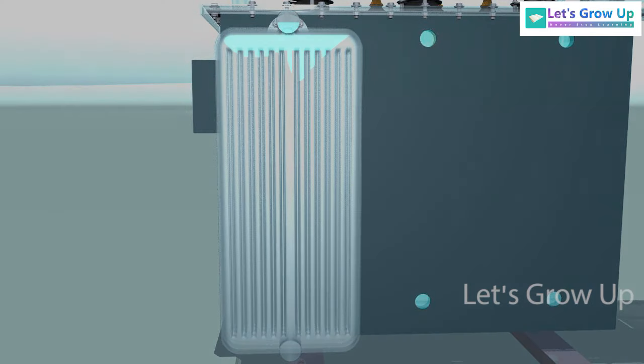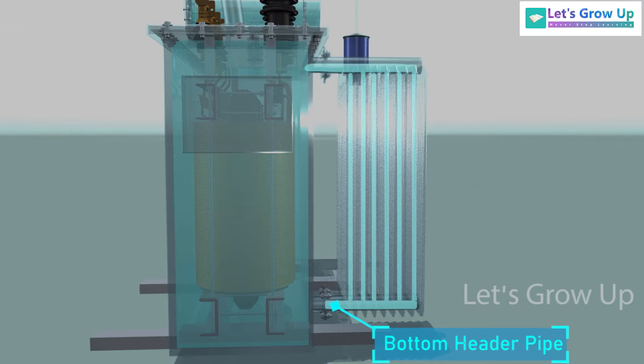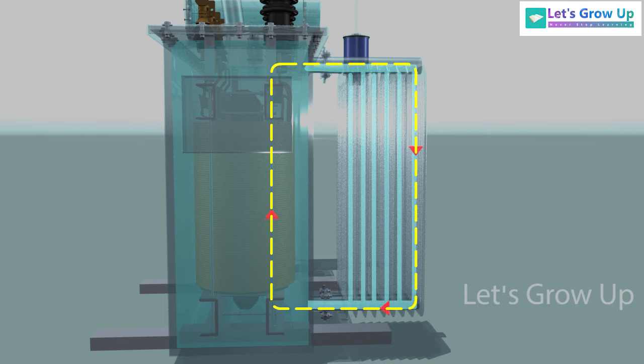Finally, hot oil cools down by dissipating heat through the thin section of wall. This cold oil comes back to the main tank through the bottom header pipe. This cycle is repeated continuously.